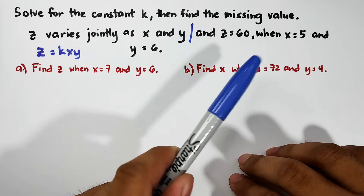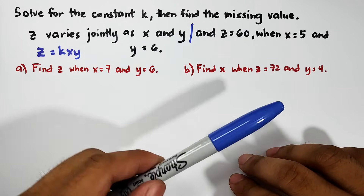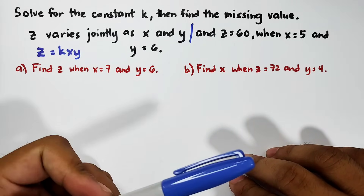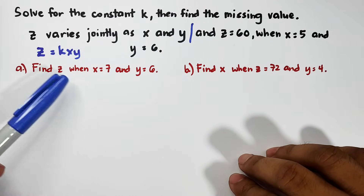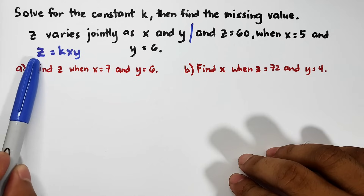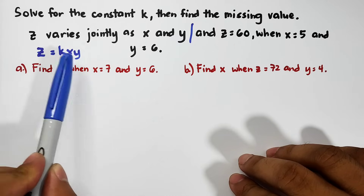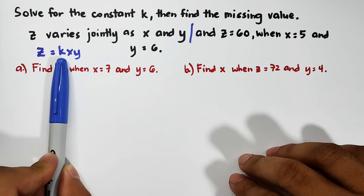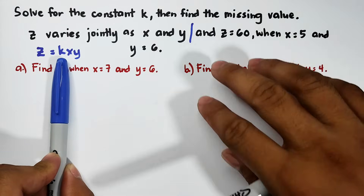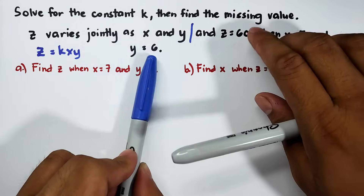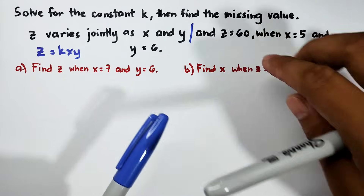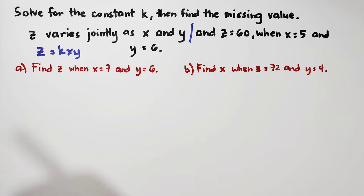As you can see, all of the variables have their given values — z, x, y all have values, and k is the one missing. Meaning, you will use the second statement to find the constant of variation.